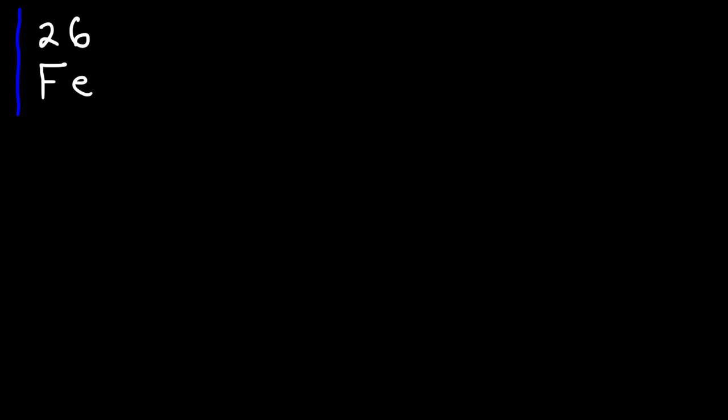Let's work on one more example — a little longer and harder. We'll use iron metal, which has an atomic number of 26. You can find that using the periodic table. Pause the video and try to determine the number of paired and unpaired electrons in iron, and whether the substance is paramagnetic, diamagnetic, or something else.